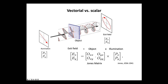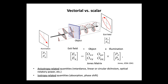The Jones matrix encompasses all the optical properties of objects — anisotropy-related quantities, which could be retardance, linear or circular dichroism (the ability to absorb light depending on its state of polarization), optical rotatory power, and also isotropy-related quantities, which are basically the absorption and phase shift induced by an object.